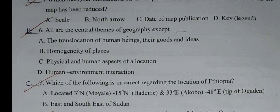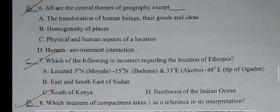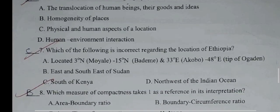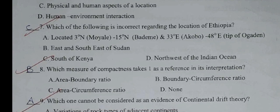Question number six: All are the central themes of geography except: A: The translocation of human beings, their goods and ideas. B: Homogeneity of places. C: Physical and human aspects of location. D: Human-environment interaction. The correct answer is B.